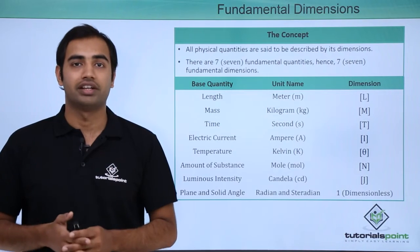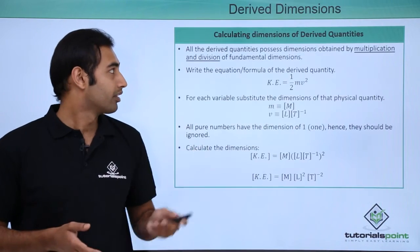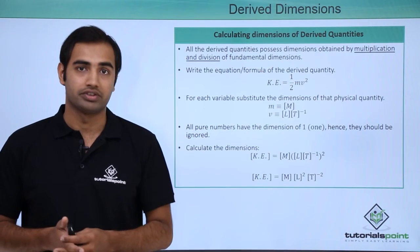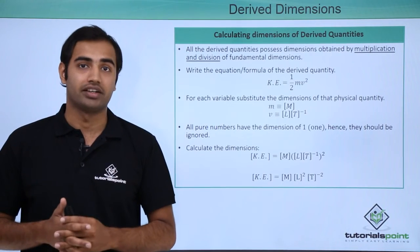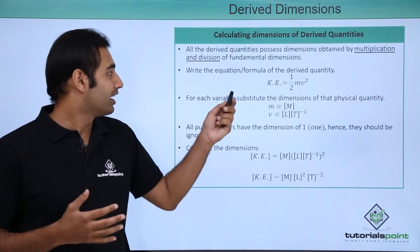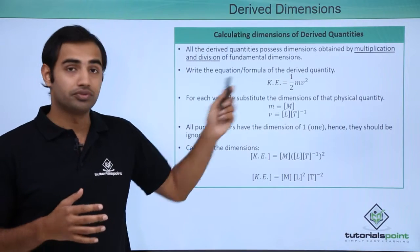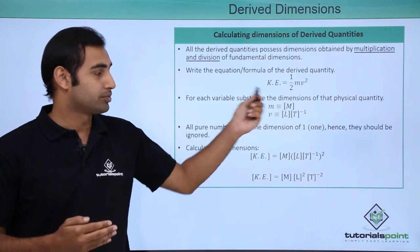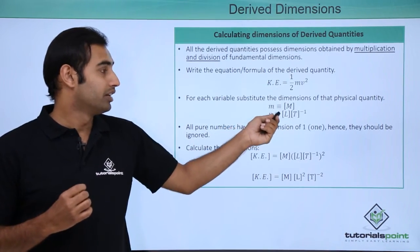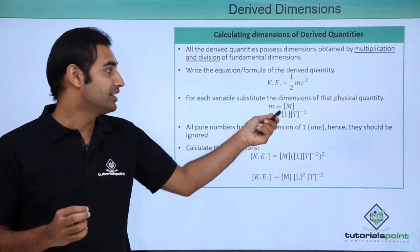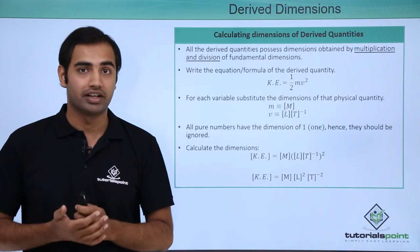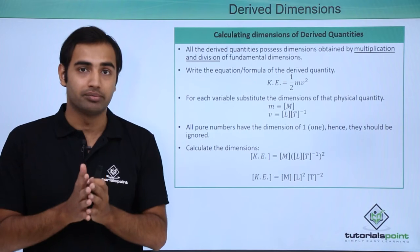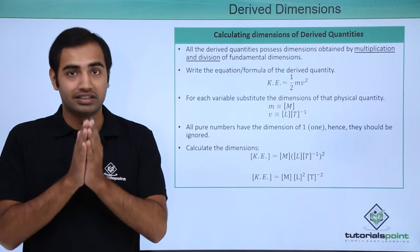Let's talk about how to calculate dimensions of derived quantities. Let's say I have a quantity which is kinetic energy, whose formula is half mv squared, and I have to calculate the dimensions of kinetic energy. The way we proceed is that we first substitute the dimension for every fundamental physical quantity present in the equation. So for mass, I will substitute M, and for velocity, I will substitute meter per second, which is length upon time or LT raised to the power minus 1, in the main equation of kinetic energy. Now, half is a pure number and therefore dimensionless.